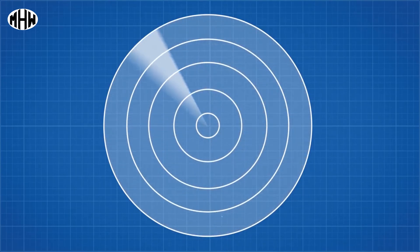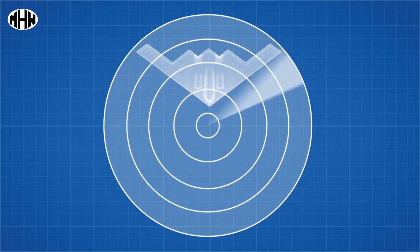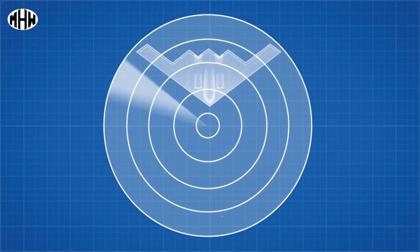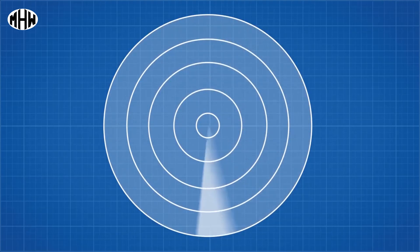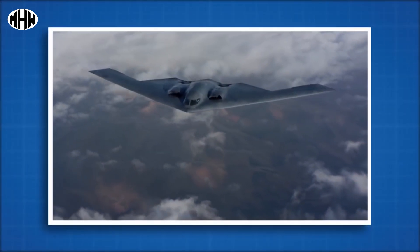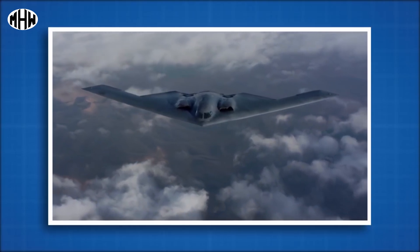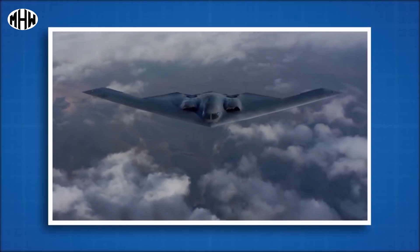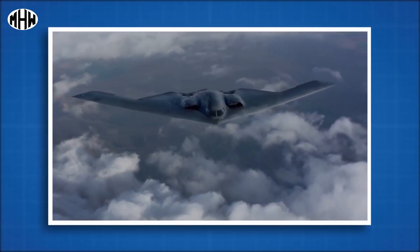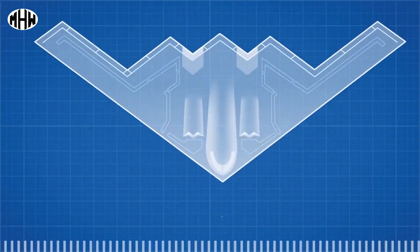The radar cross section is a measure of how detectable an object is with radar. The size of the object is just one factor, which can be mitigated with clever engineering. The B-2 has a 52-meter wingspan, yet it has been reported to have the same radar cross section as a large bird. So how does the B-2 manage to achieve this incredible feat?